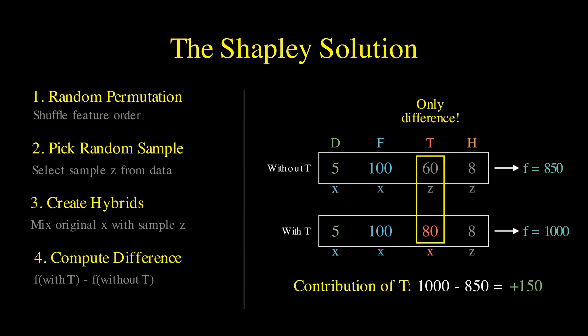To get the final Shapley value, we repeat this process thousands of times with different permutations and different reference samples, and then average all those contributions. This averages out the interaction effects and ensures a fair distribution of credit.